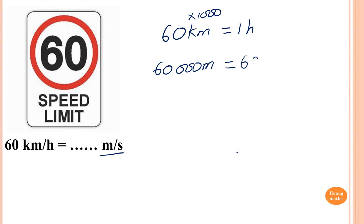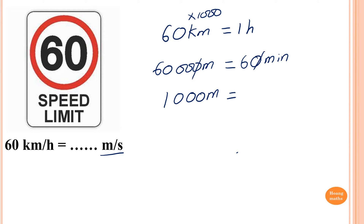So we'll write 60 minutes instead. So 60 minutes equals 60,000 meters. If I cancel this, I divide by 60, so I divide by 60, which gives me 1. So 1,000 meters is equal to 1 minute.